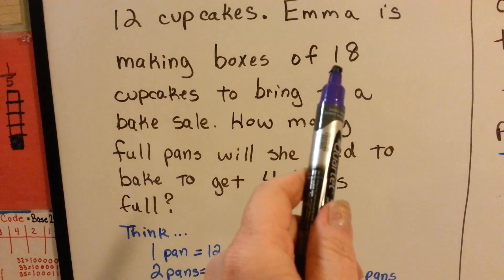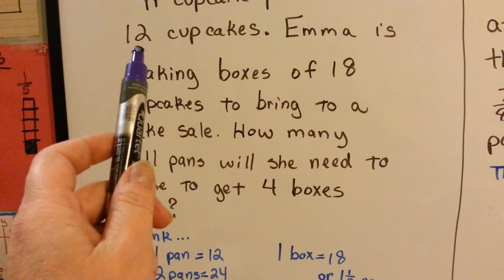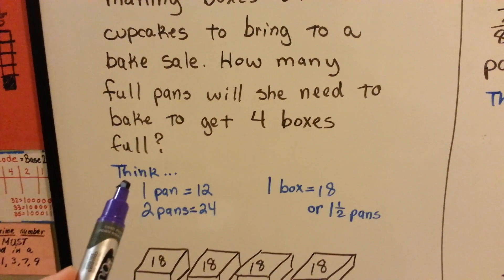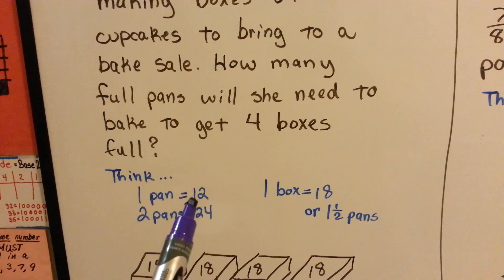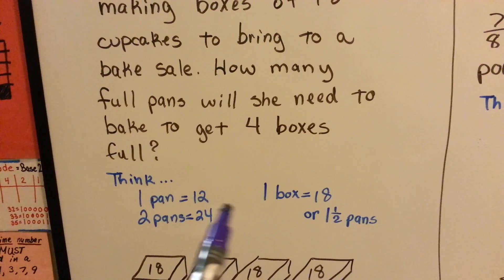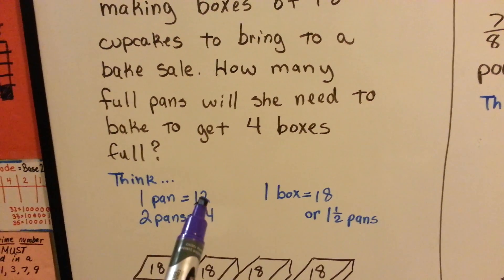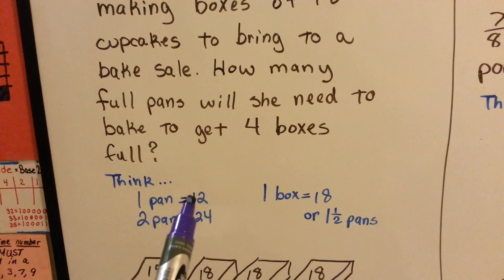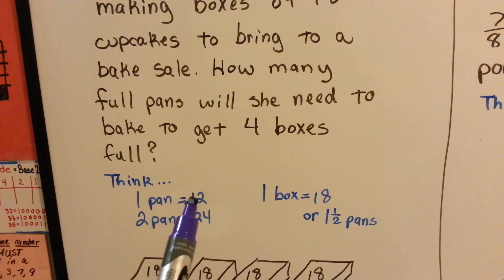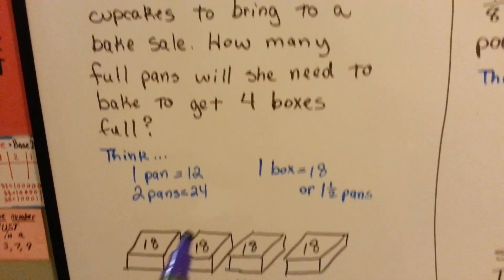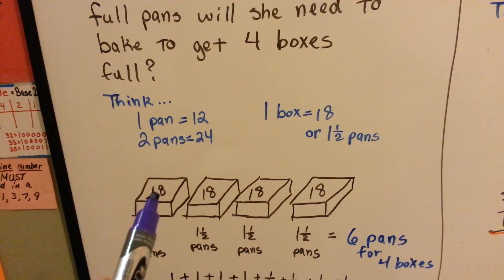Remember, there's 18 in each box, but the pan only makes 12. So we think to ourselves, 1 pan is equal to 12, 1 box is equal to 18. Half a pan is 6. If I add that half pan to the full pan, I'll have 18. 12 plus 6. So it's going to take 1 and a half pans to make 1 box.